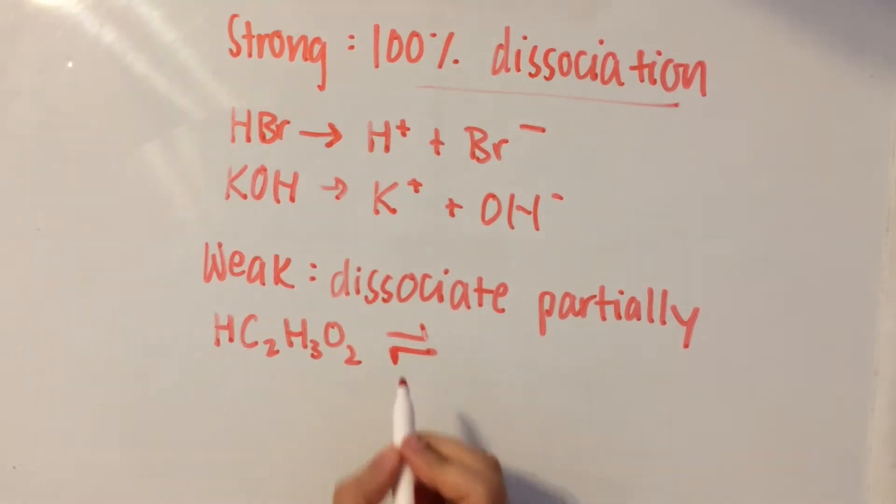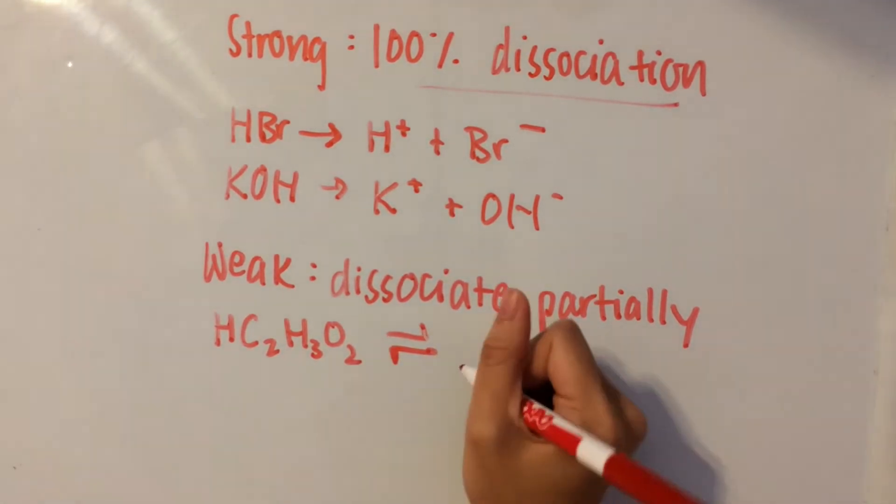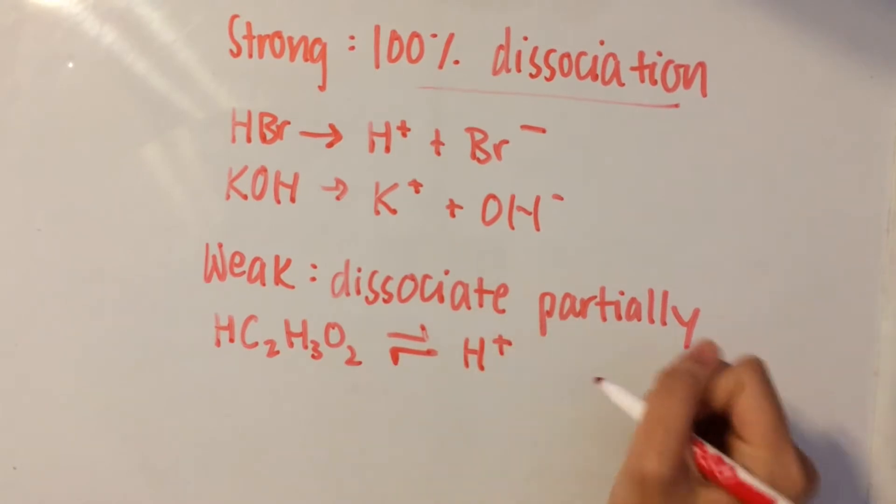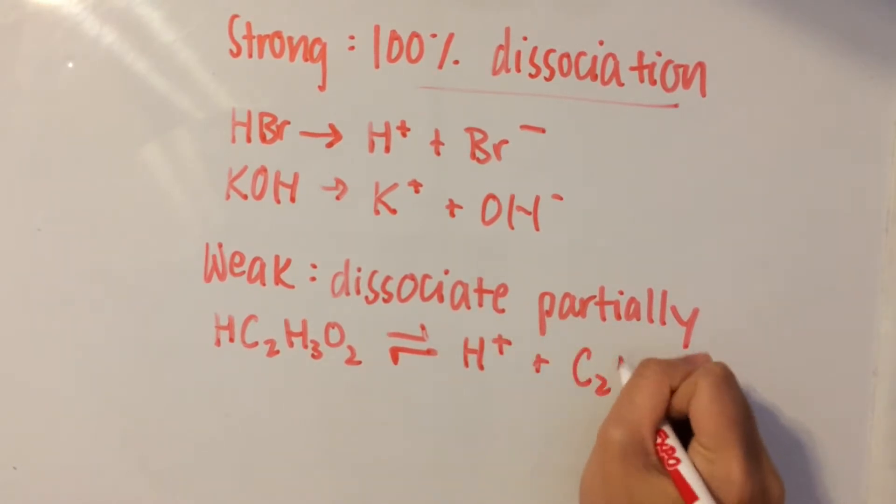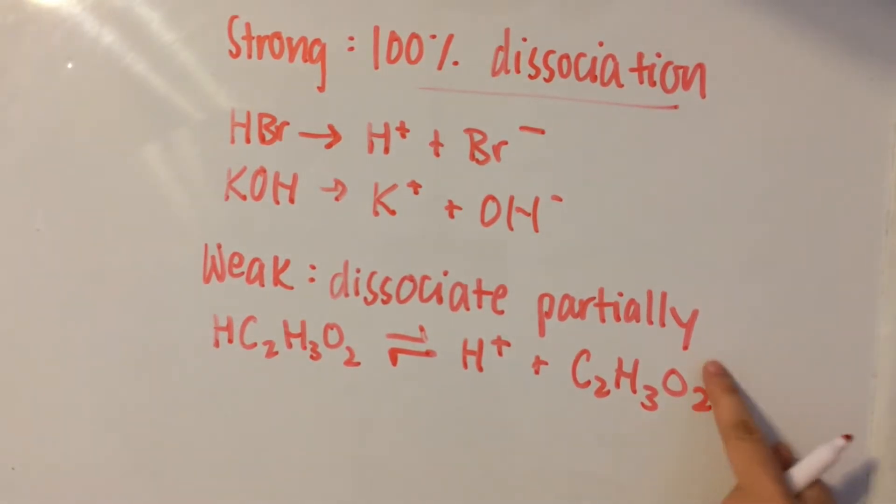To show that it only dissociates partially into ions, we use these half arrows going in opposite directions. So it's going to dissociate into H plus and acetate.